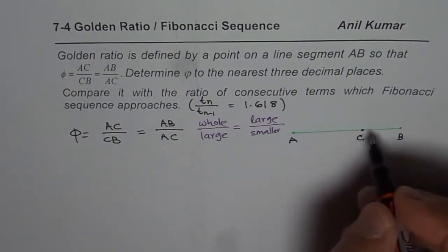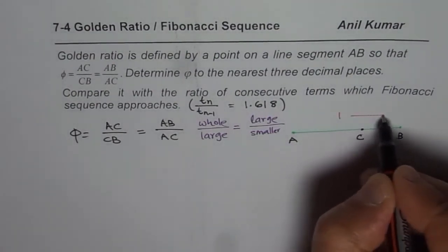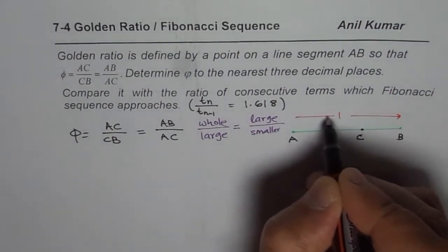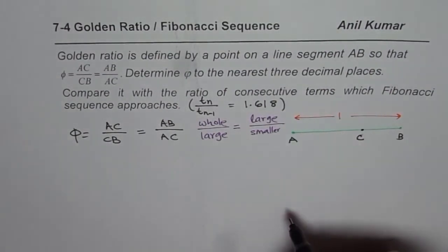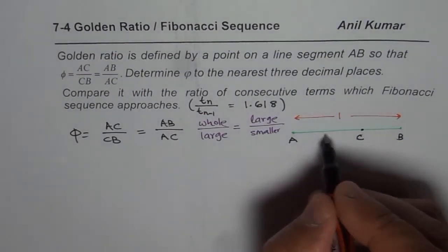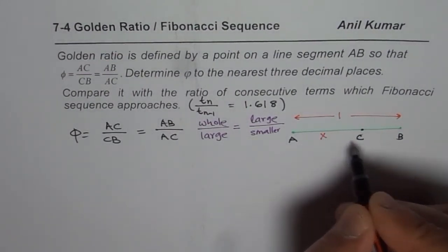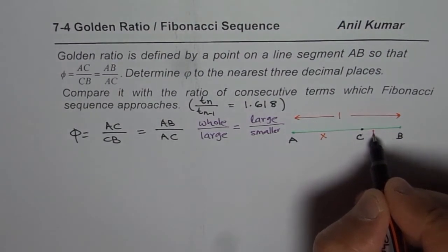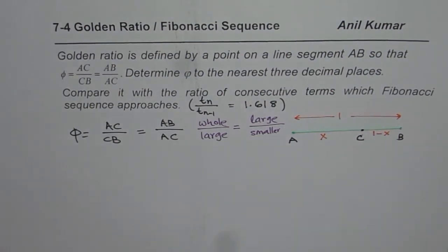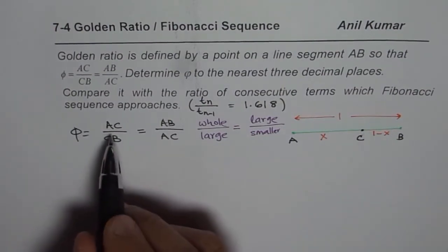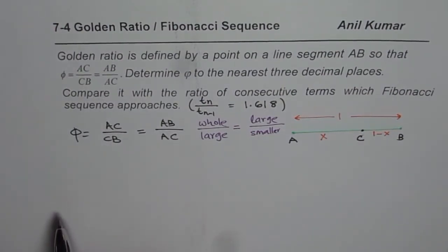Now to find what this ratio is, let us say that this whole is one unit long. So this A to B is one unit. Let us assume that part. And let us say that this larger part is X. In that case, the smaller part will be one minus X. So that is what it is.